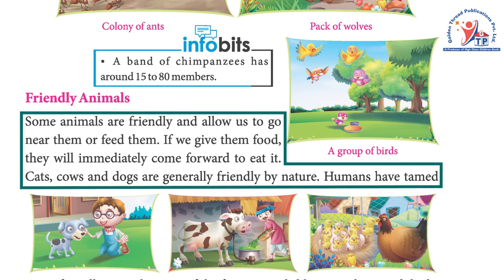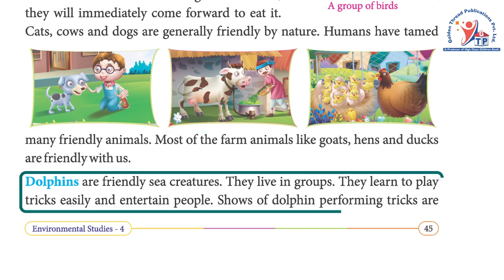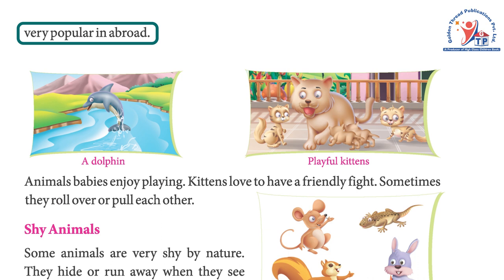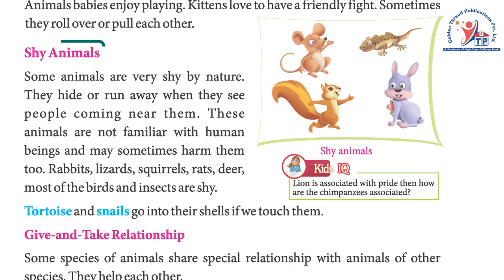Some animals are friendly and allow us to go near them or feed them. If we give them food, they will immediately come forward to eat it. Cats, cows, and dogs are generally friendly by nature. Humans have tamed many friendly animals. Most farm animals like goats, hens, and ducks are friendly with us. Dolphins are friendly sea creatures that live in groups. They learn to play tricks easily and entertain people. Animal babies enjoy playing — kittens love to have a friendly fight, sometimes rolling over or pulling each other.